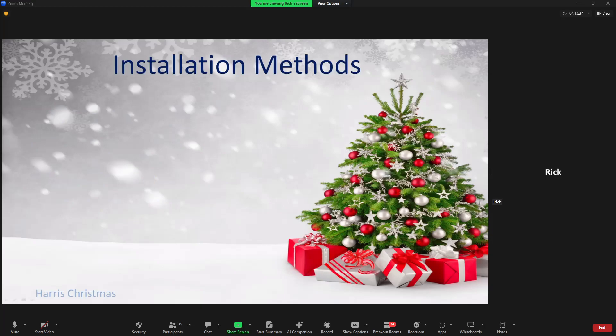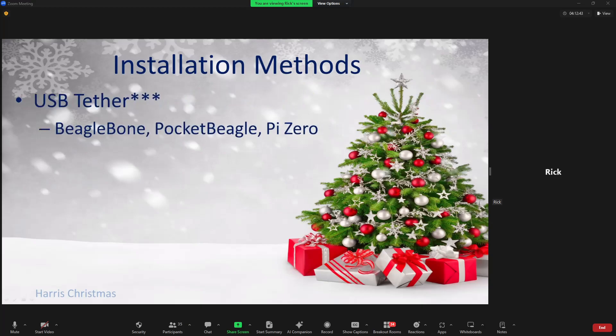When it comes to installation methods, there are three ways to install FPP. The first is the USB tether method — I put an asterisk on this because there were some CULT controllers built with a USB chip that didn't meet specs, and if you hooked up the USB tether cable it would burn up the power regulator for the USB. If you're using this method on any of the CULT controllers, verify it will work first. If you're not sure, don't chance it — you don't want to burn up your controller before you even have it configured.